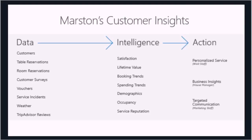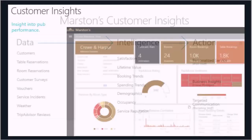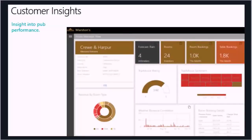That means personalised service through their wait staff, business insights through the house managers so they can see how much occupancy they have in their various rooms, and targeted communications that their marketing staff can execute better. Over here you can see we're looking at the Crew in Harper — it's a nice dashboard pulling all this information together. I can see there's some rain forecast, they've currently got £1,000 of revenue through their room bookings this month, and we can see what satisfaction is.